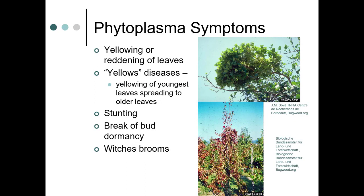Some of the symptoms you will see include yellowing or reddening of leaves. There are phytoplasma yellows diseases where yellowing occurs on the youngest leaves first, spreading to the older leaves. That's how you can tell it's not necessarily a nutritional deficiency, because a deficiency would not spread that way.